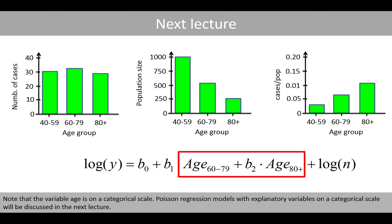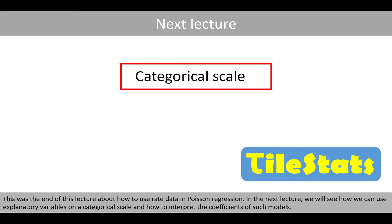Note that the variable age is on categorical scale. Poisson regression models with explanatory variables on a categorical scale will be discussed in the next lecture. This was the end of this lecture about the use of rate data in Poisson regression. In the next lecture, we will see how we can use explanatory variables on a categorical scale and how to interpret the coefficients of such models.